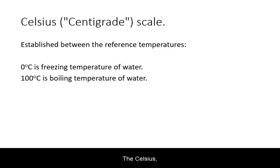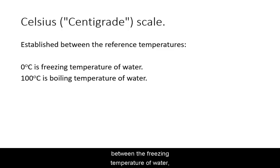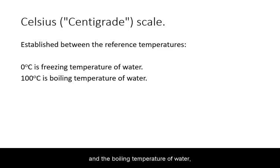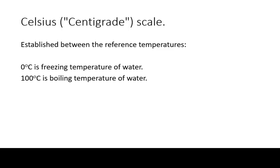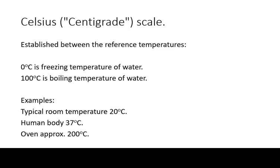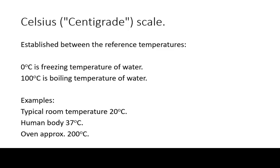The Celsius or Centigrade scale is defined between the freezing temperature of water at 0 degrees Celsius and the boiling temperature of water at 100 degrees Celsius. Here are some example temperatures on this scale.